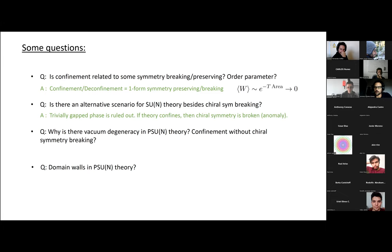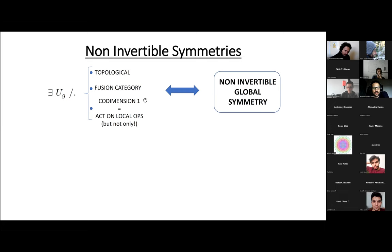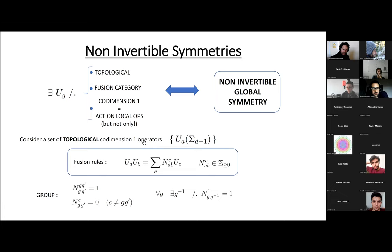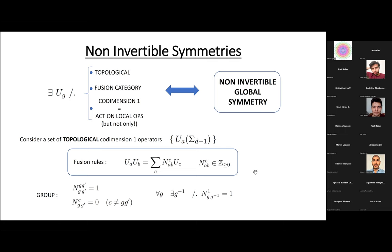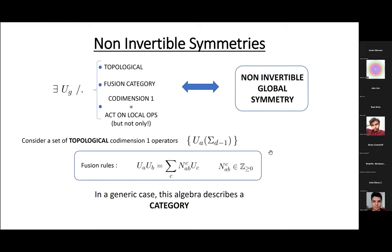In order to answer the last two questions, I need to introduce a new notion of symmetry called non-invertible symmetry. This is a bit more technical — we need to relax the condition for these elements to close a group. We will allow elements that close something called a fusion category. Consider a theory with a set of topological codimension-one operators. The fusion rules in general can be written in terms of integer numbers N^k_{ij}. Groups are particular cases, but in general this describes what is called a category. The important thing is that categories are robust and, much like ordinary symmetries, can be used to constrain IR flows.